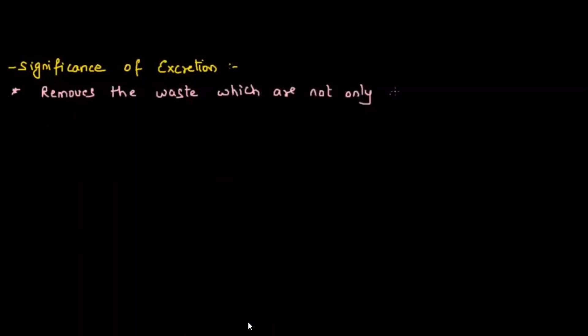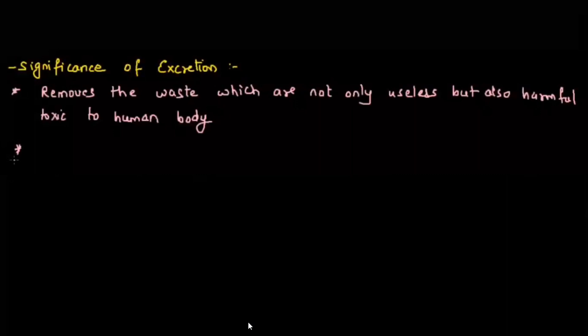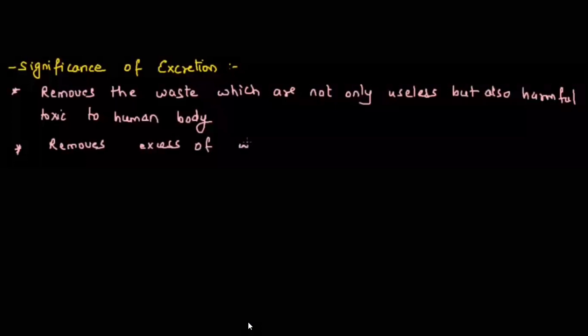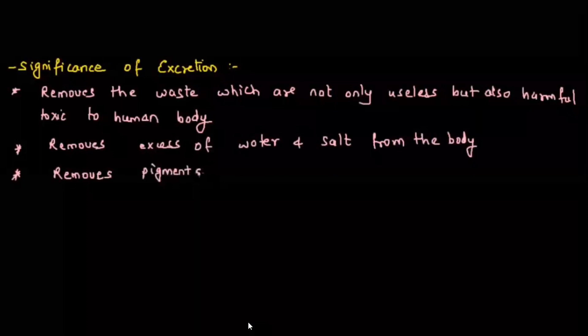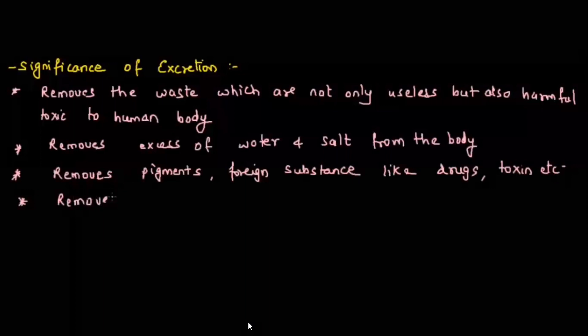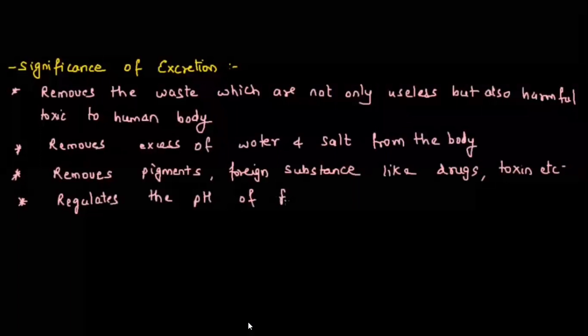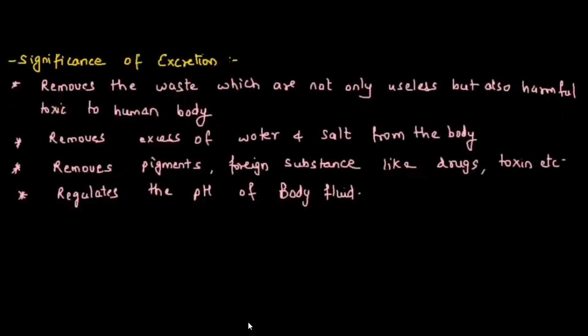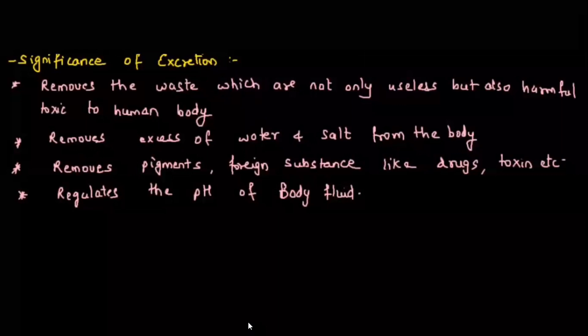The significance of excretion: first, excretion removes waste that is not only useless but also harmful and toxic to the human body. Excretion is a must because if this waste gets accumulated, it leads to severe disorders. Excretion removes excess water and salt from the body. It also removes pigments, foreign substances like drugs and toxins. Excretion is responsible for regulating the pH of body fluid — the pH of human blood is 7.4, regulated by excretion.